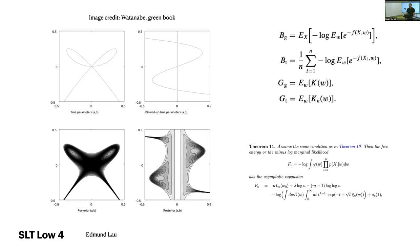SLT Low four at the end of the week is going to go through a sketch of the proof of the free energy formula. Obviously to really understand the proof, you kind of need to read the gray book. But you can get some intuition from the ideas in the proof without having gone through all that.